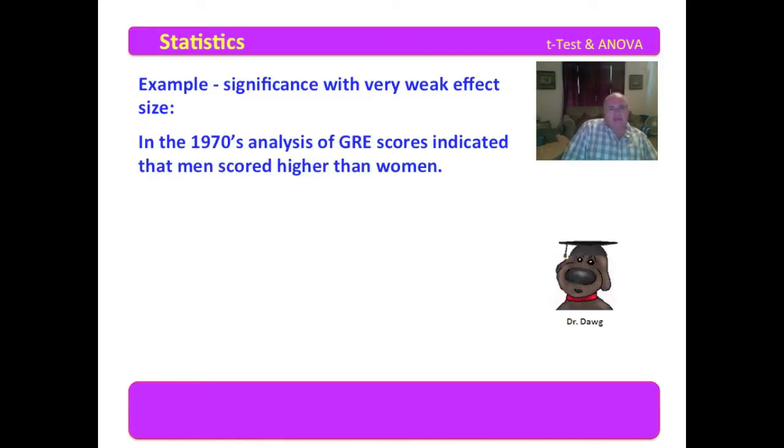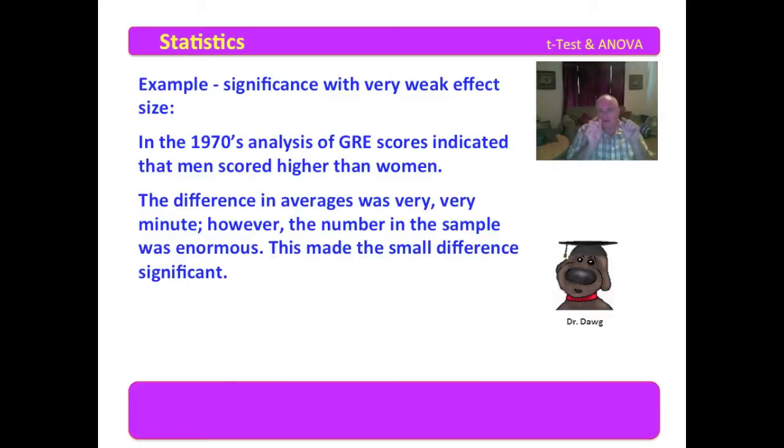In the 1970s, the analysis of GRE scores indicated that men scored higher than women. The guys jumped all over that and said, that means we're smarter than women. I'm not going to make that statement. I don't believe that at all. Sometimes my wife scares me to death. But what we had actually in the GRE test at that time, and you still have it today, is a bias towards the engineering fields, the math fields. And in the 1970s, of course, those were dominated by men. But they found a significant difference between the scores. Now, the difference in the averages was very, very minute. However, the number in the sample was enormous.